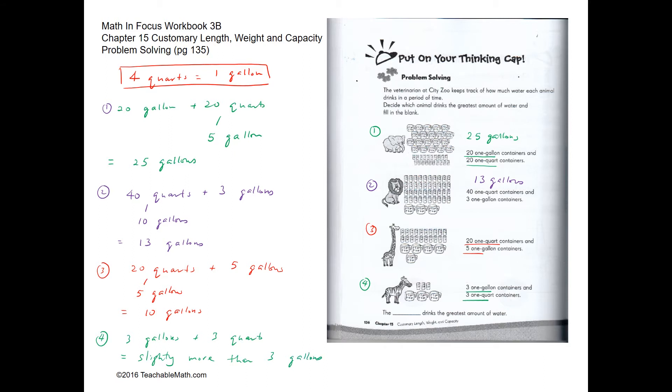Our task is to find the greatest amount of water. The elephant is drinking 25 gallons, the lion 13 gallons, the giraffe 10 gallons, and the zebra slightly more than 3 gallons. So the elephant drinks the largest amount of water.